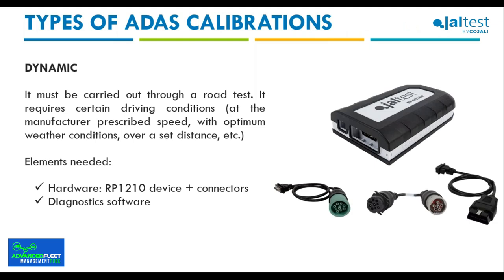ADAS calibration can be divided into two main types: static calibration and dynamic calibration. The type depends on the vehicle manufacturer and the system itself. Dynamic calibrations must be carried out through a road test, requiring certain driving conditions at the manufacturer-prescribed speed, with optimum weather conditions over a set distance.